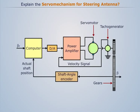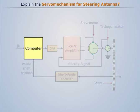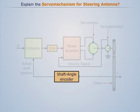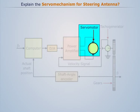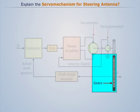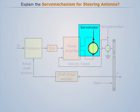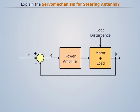The block diagram of the servo mechanism for steering the antenna contains the following elements: computer, power amplifier, shaft angle encoder, servo motor, gears, and tachogenerator. The angular velocity of the servo motor is increased in the direction toward error reduction.